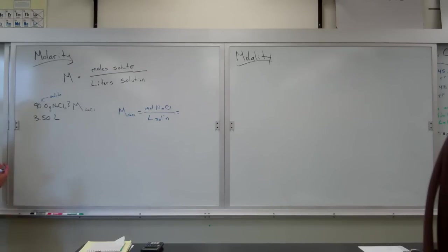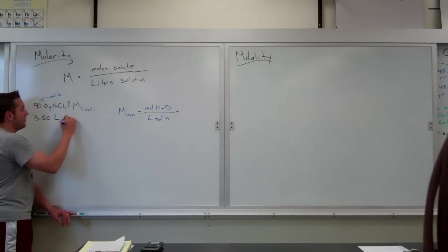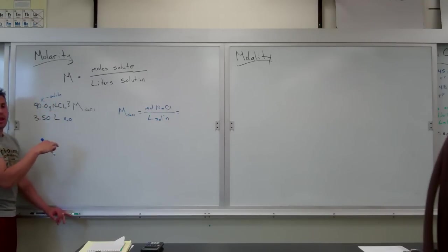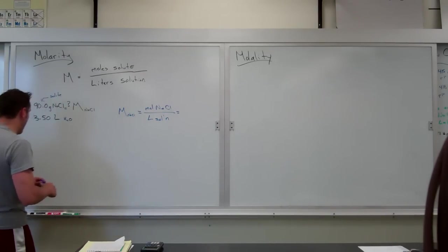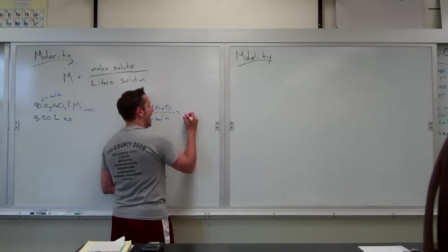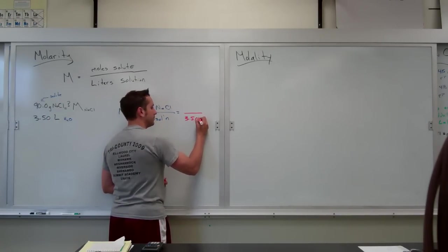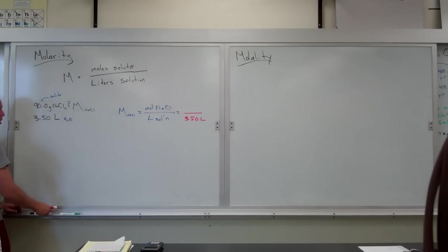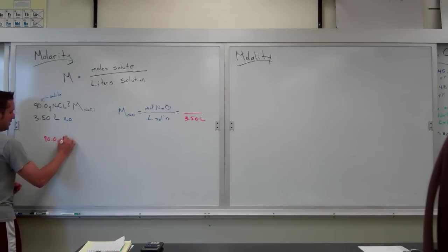So I can get more specific with my equation. I want to find moles of NaCl per liter of solution. Now, one thing I want you to understand is the 3.50 liters is technically of water. But when I put 90 grams of NaCl, salt, into the 3.50 liters, that is not going to change what the volume of the solution is because the salt will dissolve. And so even though it's listed as the liters of water, the 3.50 liters is really of the entire solution.